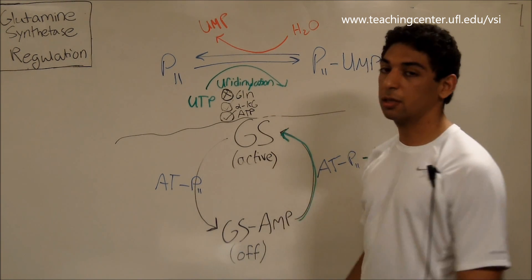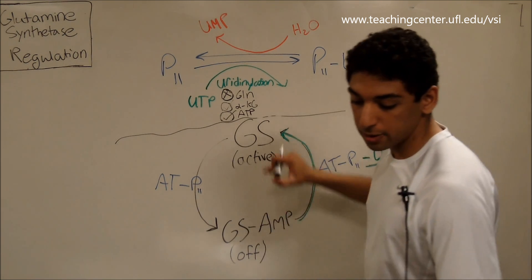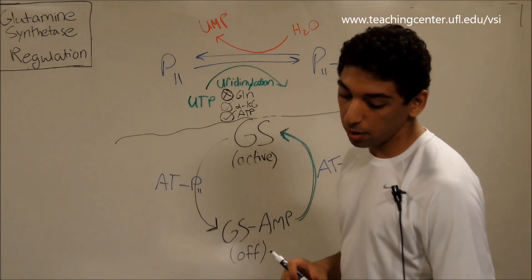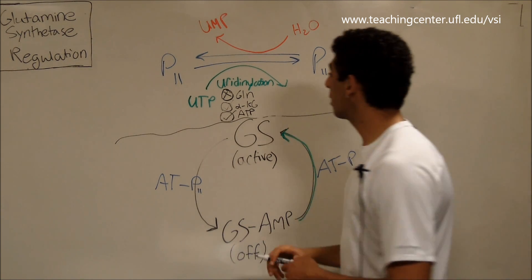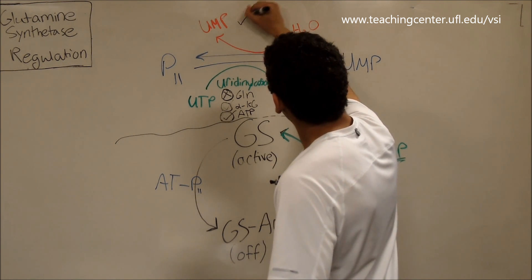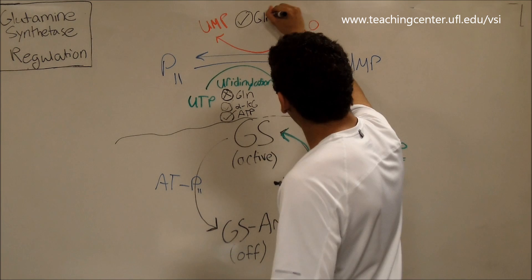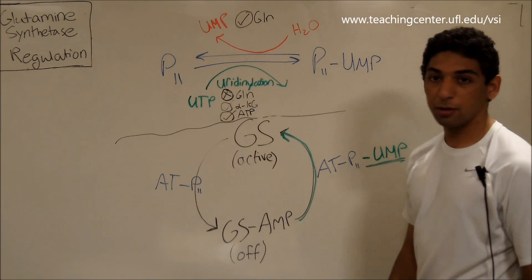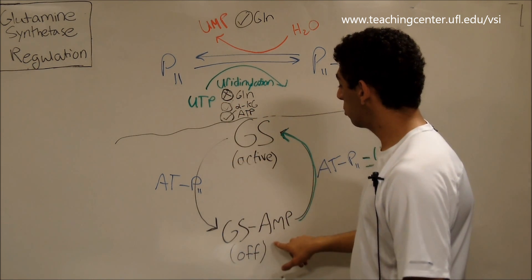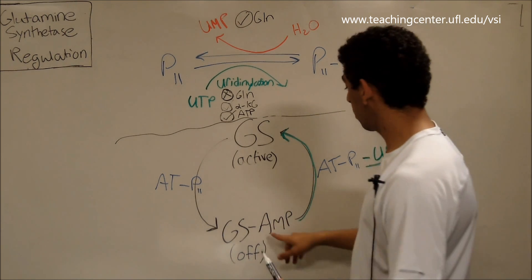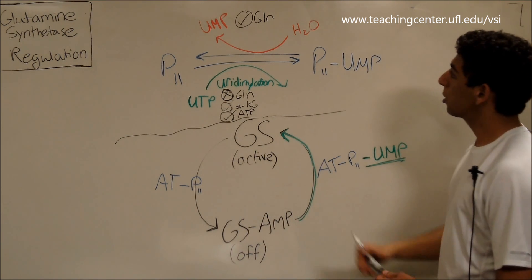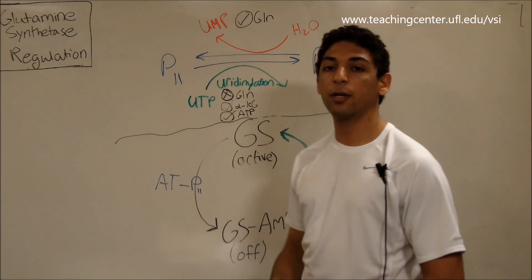So on the opposite side, what is affecting this up here? Well, it's the exact opposite of the bottom side, as you can guess. Glutamine activates this process because if you have a lot of glutamine, same logic as last time, you're not going to want to make any more, so you're going to want to turn off glutamine synthetase. And you turn off glutamine synthetase by removing the UMP. So glutamine synthetase promotes de-uridinalation.